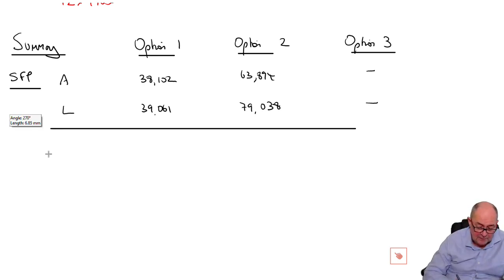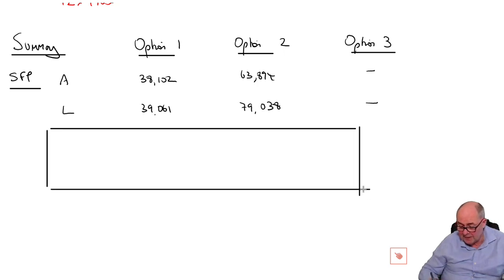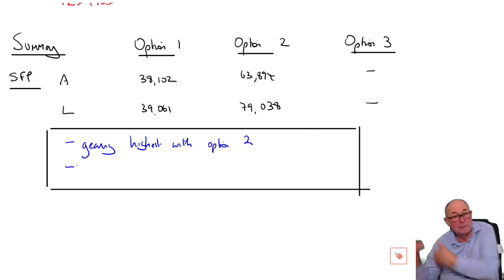Option 1, you had assets of 38,102 and liabilities of 39,061. Option 2, 63,894 and 79,038. And the last one, no impact on the balance sheet. A very good answer would just make the point here that when you think about things like interpretation, that gearing will clearly be highest with option 2. And option 1 and 2 will both basically make gearing worse. Gearing is highest with option 2.